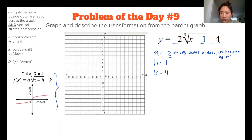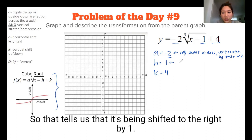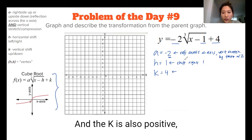The h is 1, so it's positive. So that tells us that it's being shifted to the right by 1. And the k is also positive, so it tells us it's being shifted up 4.